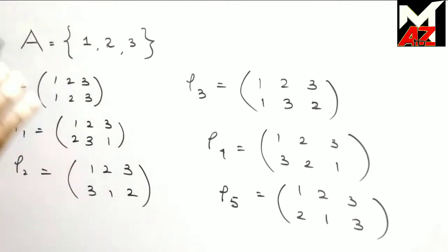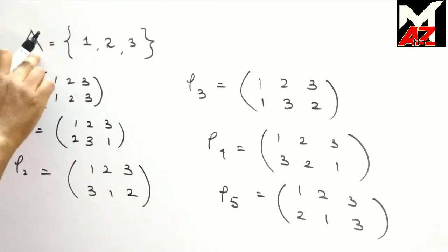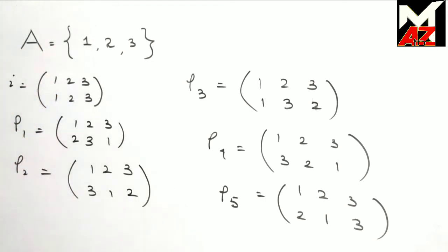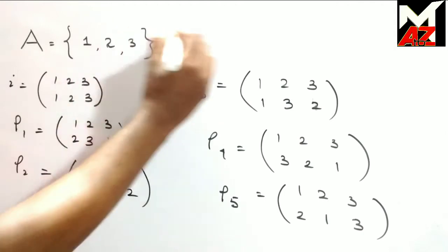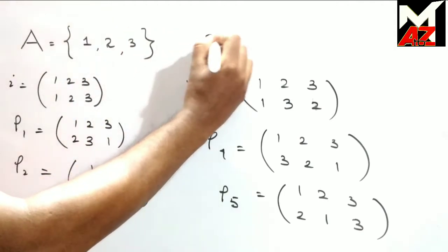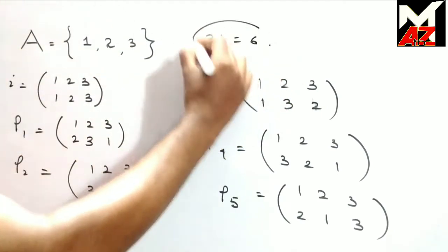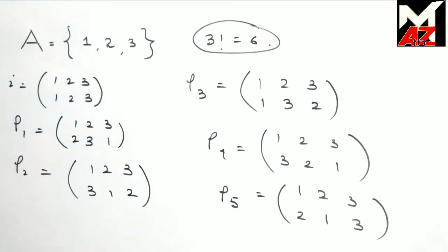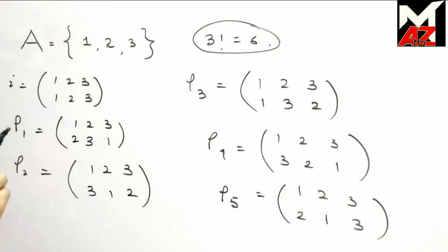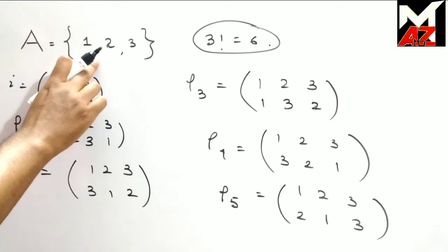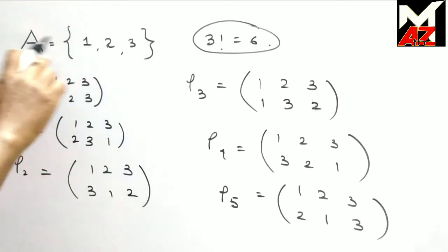These 6 are the bijective mappings from A onto itself, because the number of bijective mappings is 3! = 6, since there are 3 elements in set A. These 6 bijective mappings are also known as permutations of 3 symbols.